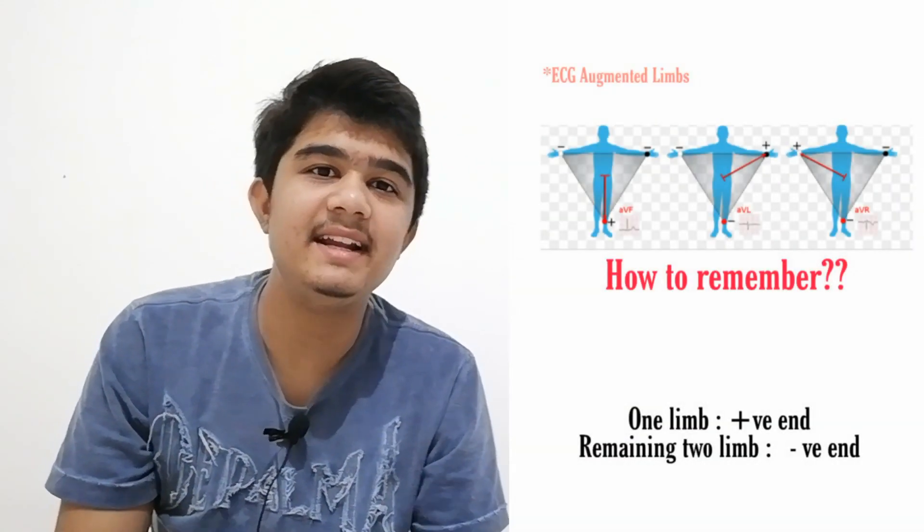Now let's talk about the augmented limbs. Augment means to increase. These leads increase the potential. To remember them, there's a simple trick: AVR - R means right arm, AVL - L means left arm, and AVF - F is the left foot.